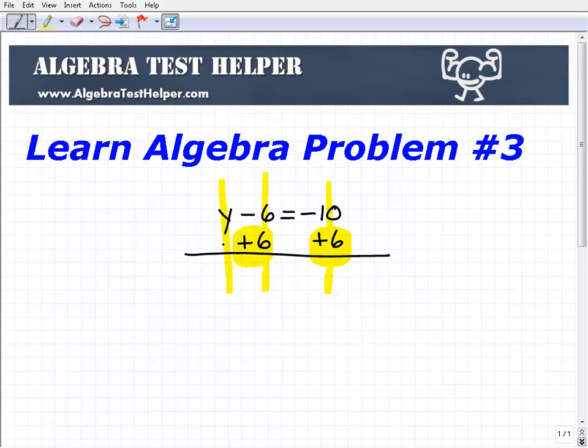So it's going to be y plus nothing is y, minus 6 plus 6 is 0. So that goes away.